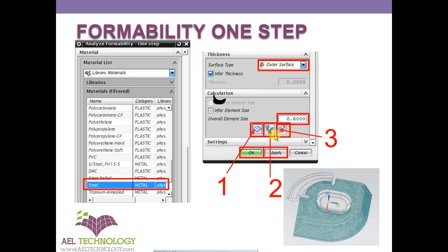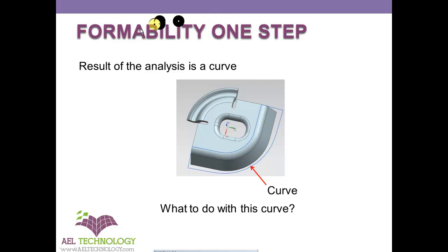This quality check is the second operation. Click here and it will confirm that the mesh is good, giving a green signal to proceed. Next is Calculate, the third operation. Unfortunately, it won't give you a solid feature — the result of this Formability One Step analysis is a curve.